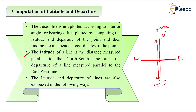Next is departure. It is the line measured parallel to the east-west line. If it is towards the right or towards east, it is known as easting and the departure is positive. If it is towards the left or towards west, it is known as westing and it is negative. So: latitude — upward positive, downward negative; north positive, south negative. Departure — right positive, left negative; east positive, west negative.